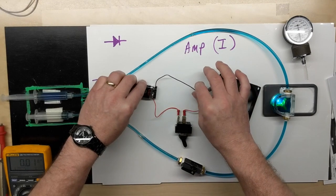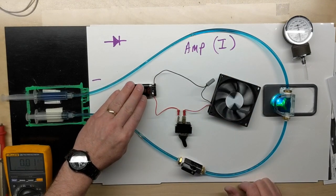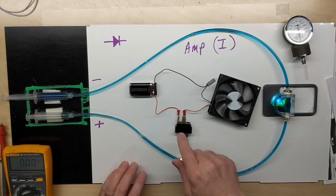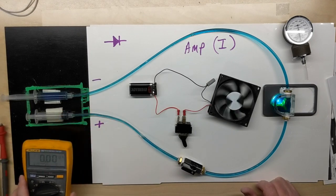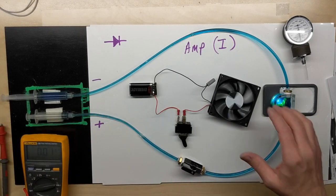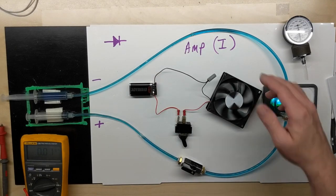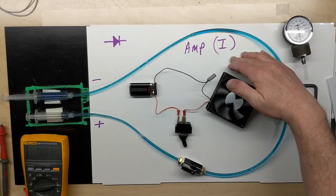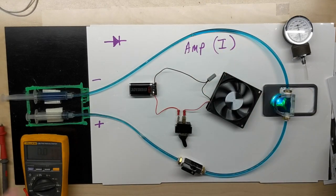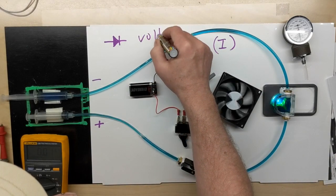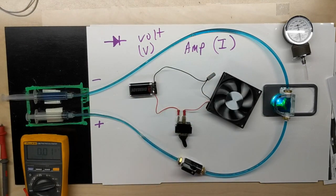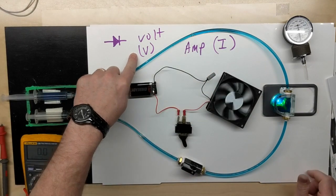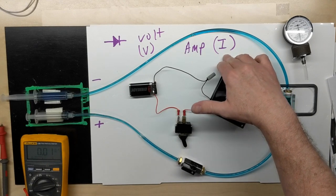So we learned that we had to have conductors, a force or a voltage applied, and a complete circuit path. And we learned how to measure current. We also learned that we measure current in amperes or amp. And where voltage had a symbol of V, now we learned that amp has a symbol of I.